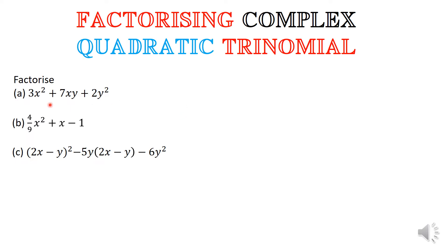So the first one is 3x squared plus 7xy plus 2y squared. So the problem normally with this one is there are squares on both ends. And then you have 4 over 9 x squared plus x minus 1. That 4 over 9 is kind of tricky for most students.